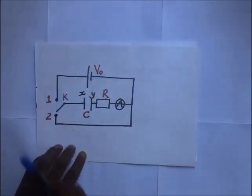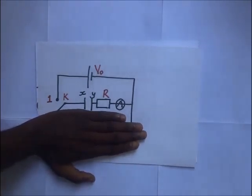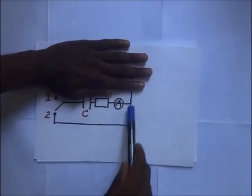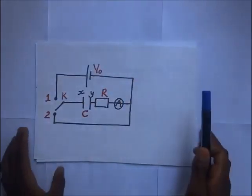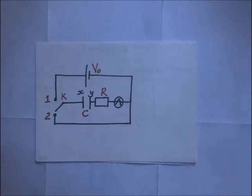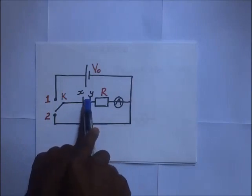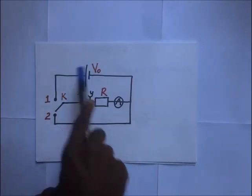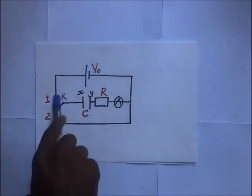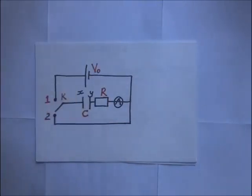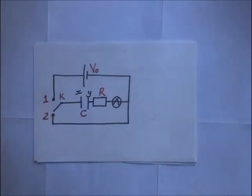When switch key is connected to terminal one, the lower part of the circuit is out of the picture. When connected to terminal two, the upper part is out and only the lower circuit remains. To charge the capacitor, we connect it to terminal one so it gets charged. To discharge the capacitor, we connect it to terminal two.